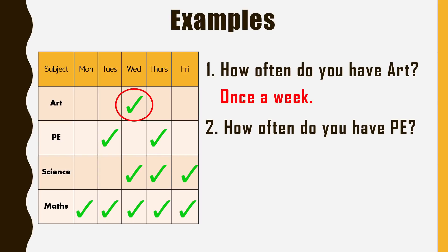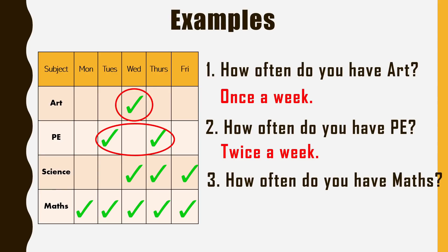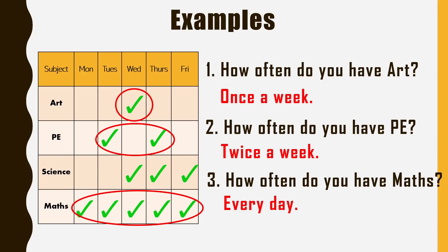Number two: how often do you have PE? There are two ticks — on Tuesday and Thursday — so the answer is 'twice a week.' Twice means two times. Number three: how often do you have maths? There are five ticks — which means every day — so the answer is 'every day.' Is that clear? That's the end of our lesson for today.